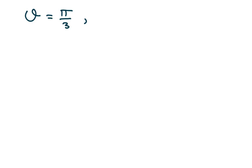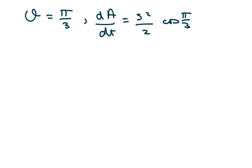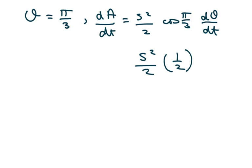And then we want to do it when theta equals pi over 3. So the derivative of area with respect to time equals S squared over 2 times cosine of pi over 3 times the derivative of theta with respect to time. Cosine of pi over 3 is one half, and dθ/dt is one half, so our answer is going to be S squared over 8.